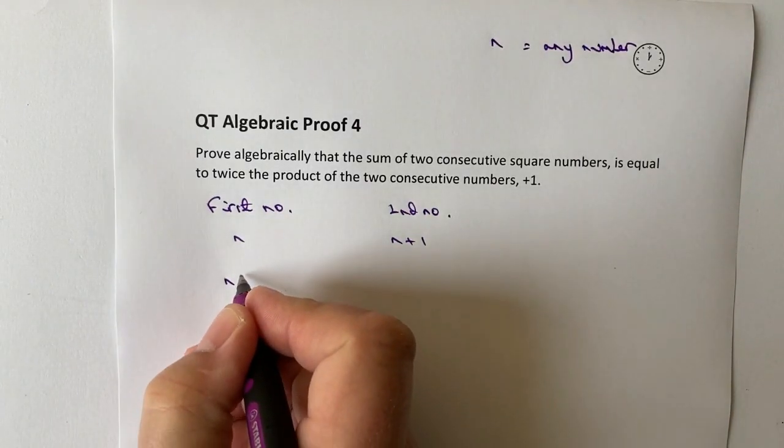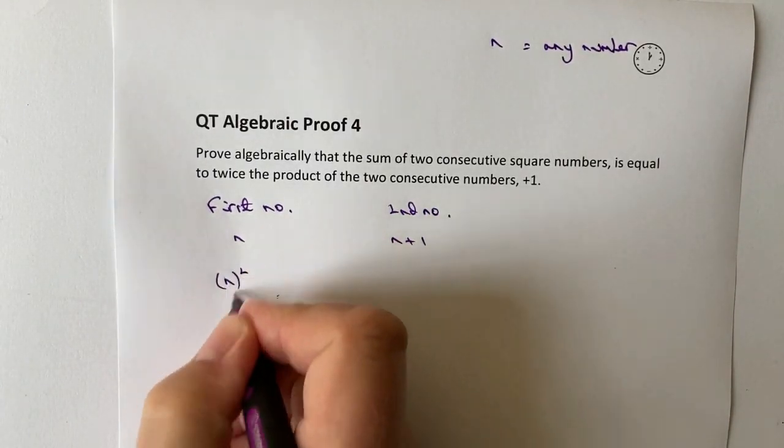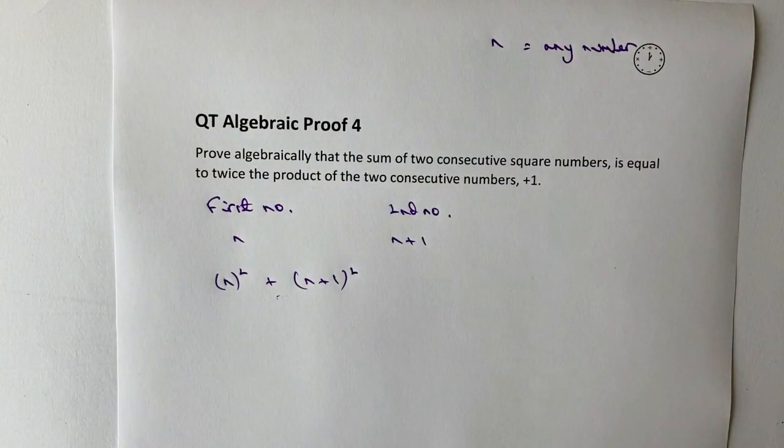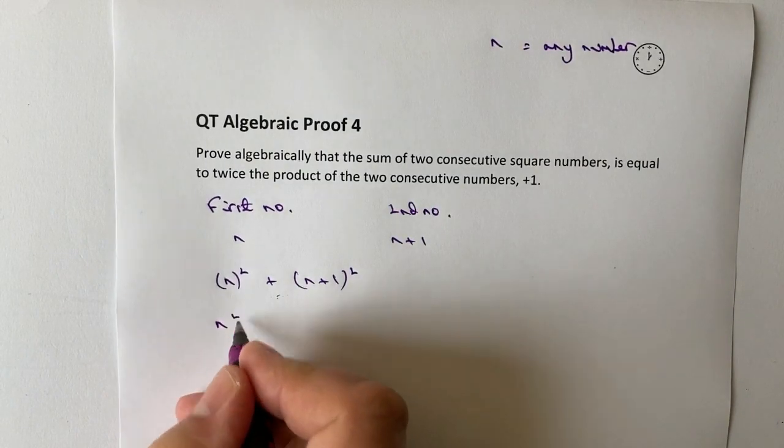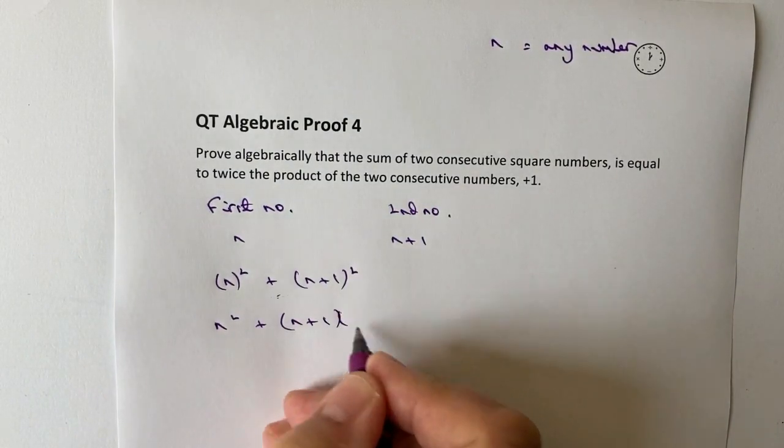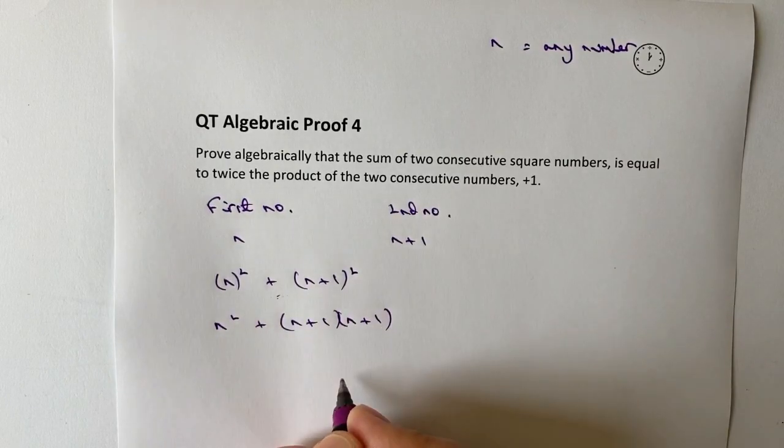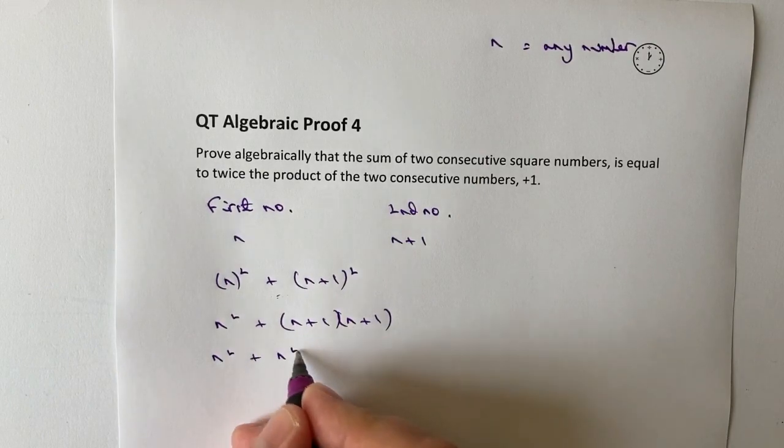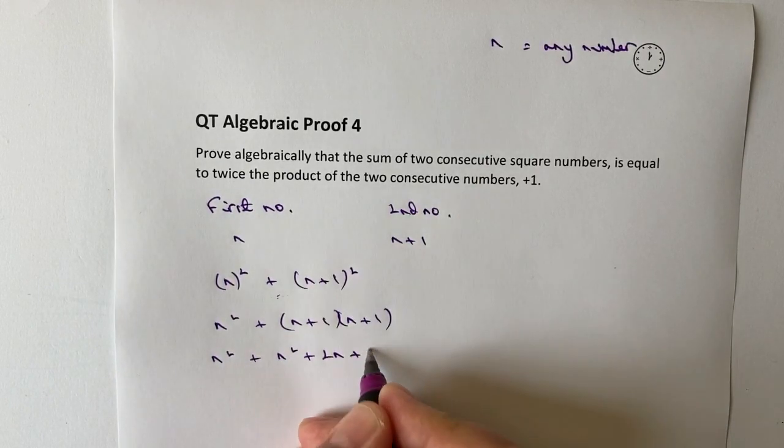So we're going to have n squared plus n plus one squared. Well that's going to give us n squared plus, and then I've got n plus one multiplied by n plus one. So let's just expand that. I've got n squared plus n squared plus two n plus one.